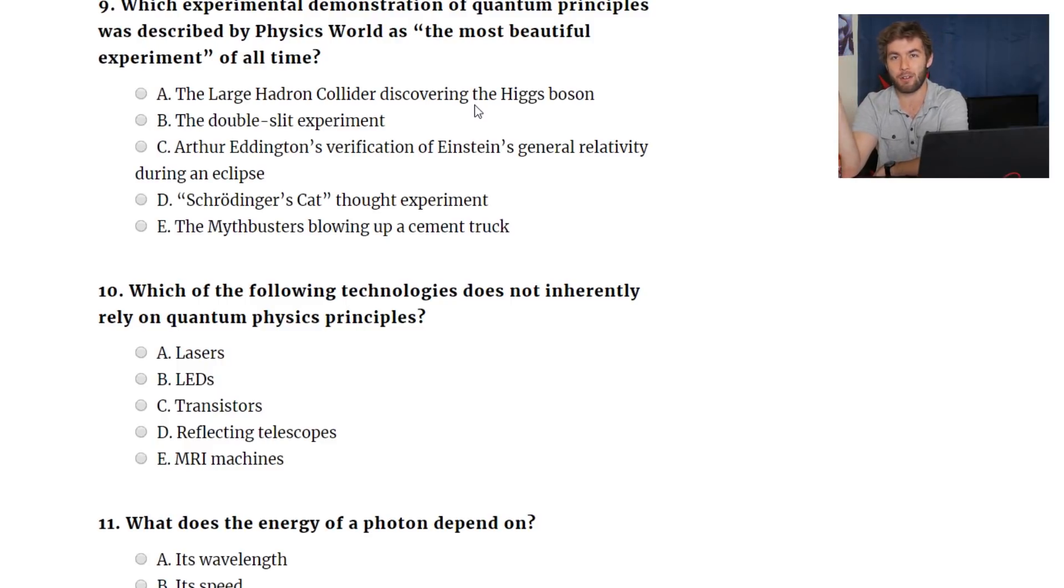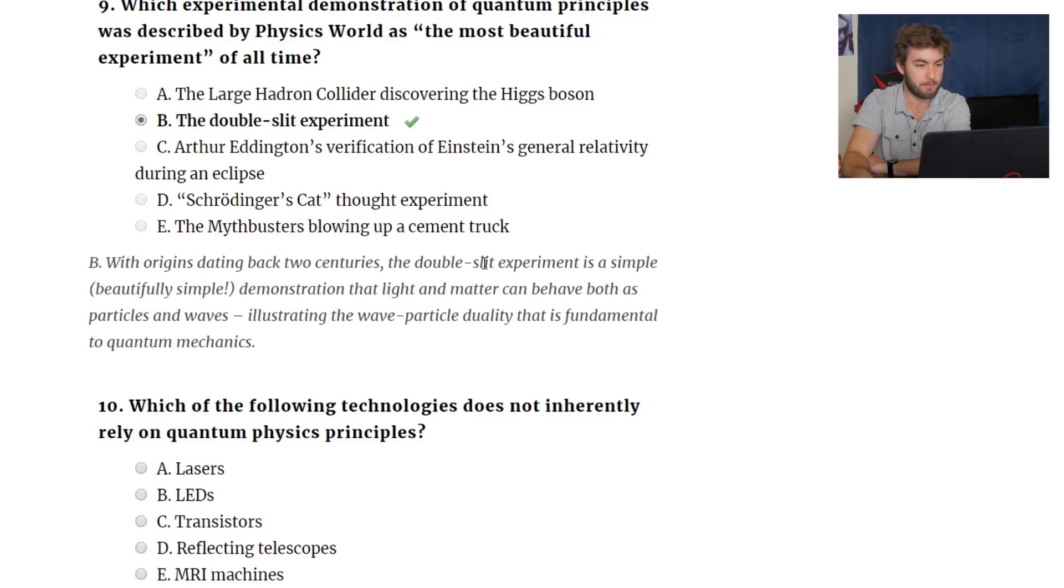Arthur Eddington's verification of Einstein's GR during an eclipse, Schrodinger's cat thought experiment, or Mythbusters blowing up a cement truck. I miss Mythbusters. Probably the double-slit. I mean, it's so easy. You can do that at your own house. You can have two slits and a screen and then a laser, make the interference pattern. Probably that one. Yes. Beautifully simple. Yeah, you can do that anywhere.